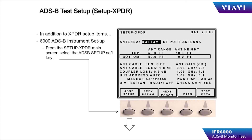After the common setup items have been entered, the operator chooses the ADS-B setup page by using the ADS-B setup soft key.